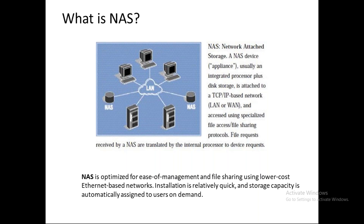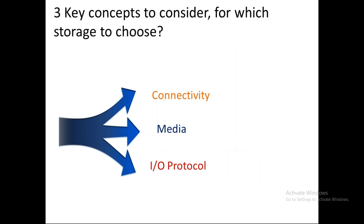Not all technologies serve all problems, so storage selection must be optimized according to the industry's needs. There are three key factors to consider when installing a storage variation for a company. First is connectivity — you need to ask whether they want direct connectivity like DAS, between a system and processor, or network connectivity to scale storage over a network.